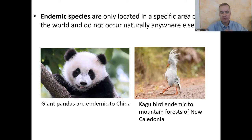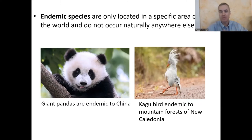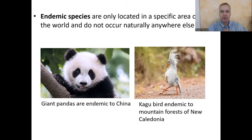For example, giant pandas are endemic to China and even certain parts of China, like the Sichuan Basin. The kagu bird is endemic to a little set of islands in the Pacific Ocean called New Caledonia — and even there, only to the mountain forests of those islands. You can have a species be endemic to a continent, a set of mountains, or even a particular forest. Species with a very narrow range are called narrow endemics.